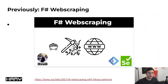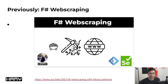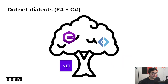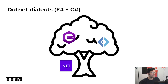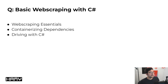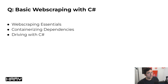So why are we making this video? Previously I made a video like this for F# web scraping, and I thought this would be an interesting opportunity to showcase the differences but also mainly the similarities between these two .NET dialects of F# and C#. The question we're trying to answer is: how can we do basic web scraping with C#?